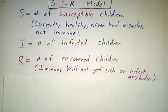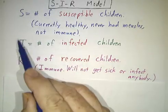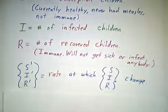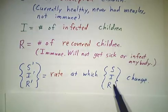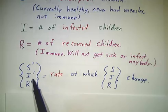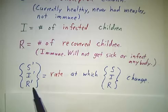So what we are doing is we break the population into these three groups, and we keep track at the rate at which the three populations change. So S' is the rate at which S is changing. I' is the rate at which I is changing. R' is the rate at which R is changing.